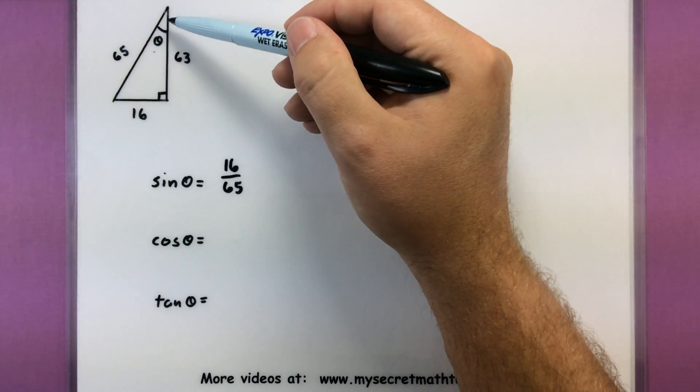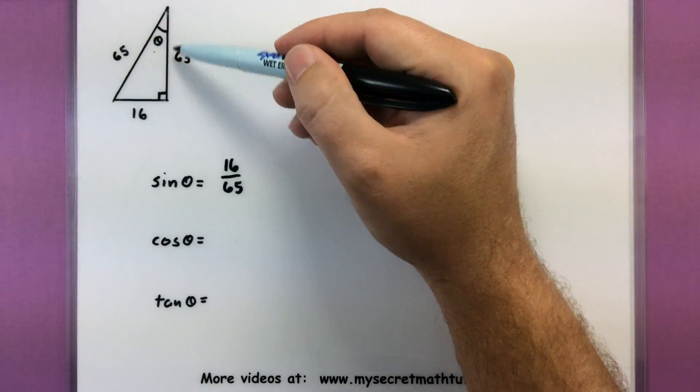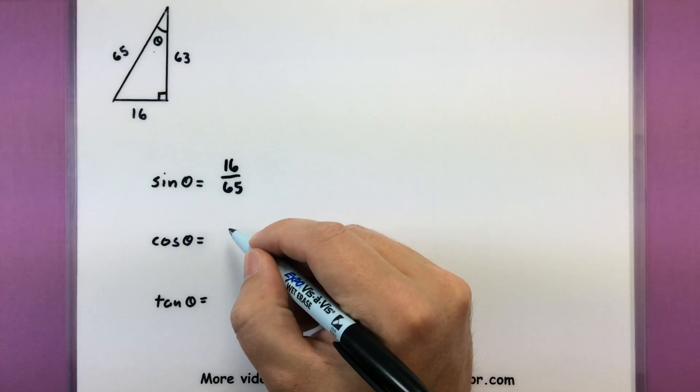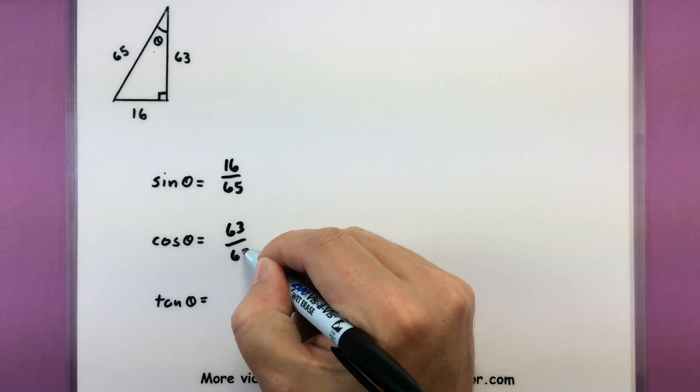In that same fashion, if I want to find the cosine of this angle, sixty-three is my adjacent side and I can put that over sixty-five. So sixty-three over sixty-five.